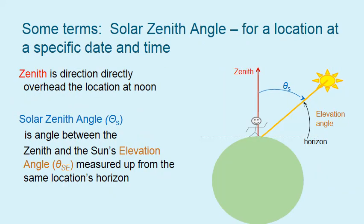Some terms regarding solar zenith angle: the zenith is the location directly overhead from your location at noon. The solar zenith angle is the angle between that zenith and the elevation of the Sun, measured up from the same location's horizon.